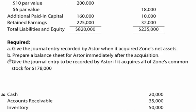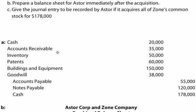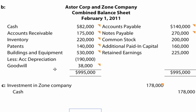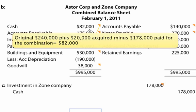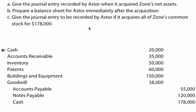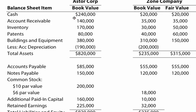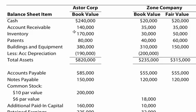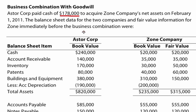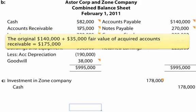Now for Part B: prepare a balance sheet for Aster immediately after the acquisition. Here's the balance sheet, and I've put notes in here as to why each item is what it is. Starting on the left side with assets: cash is $82,000 — the original $240,000 plus $20,000 acquired minus $178,000 paid for the combination. We started with $240,000, acquired $20,000 making $260,000, then paid $178,000, leaving $82,000.